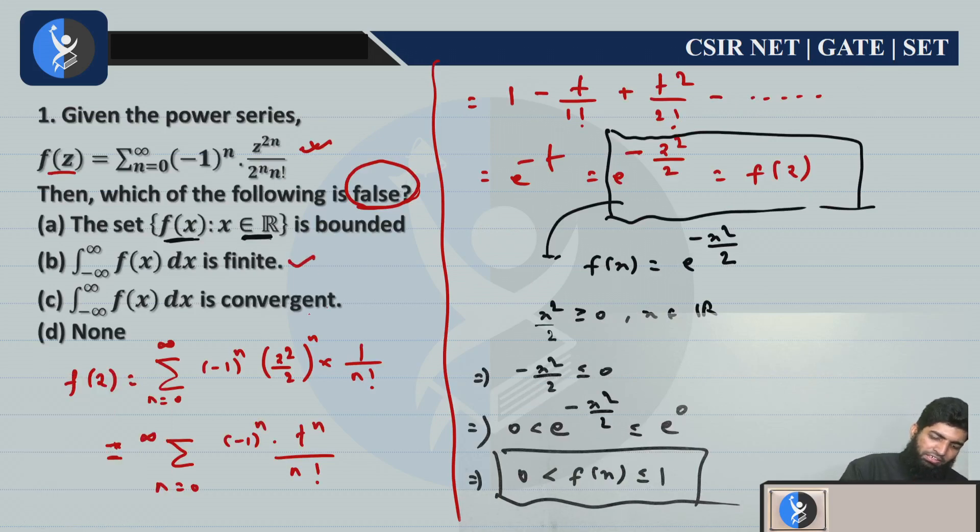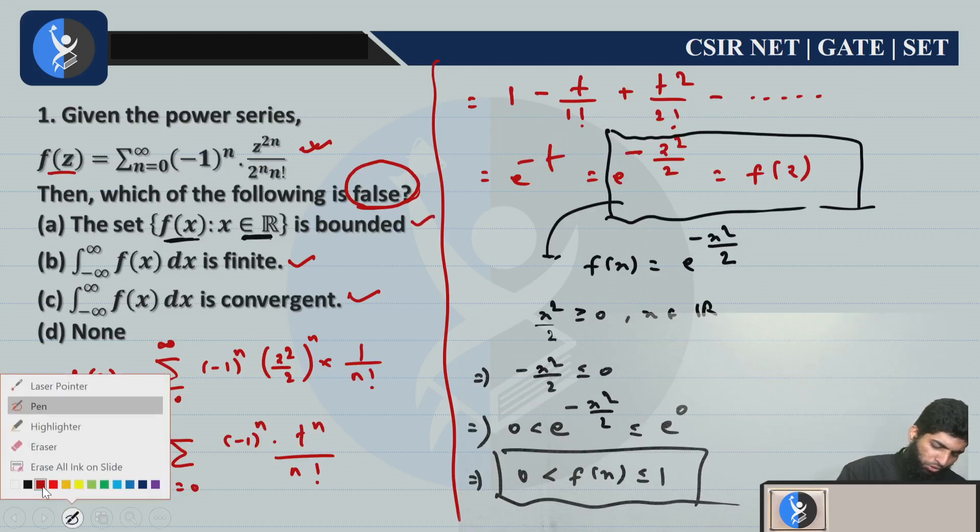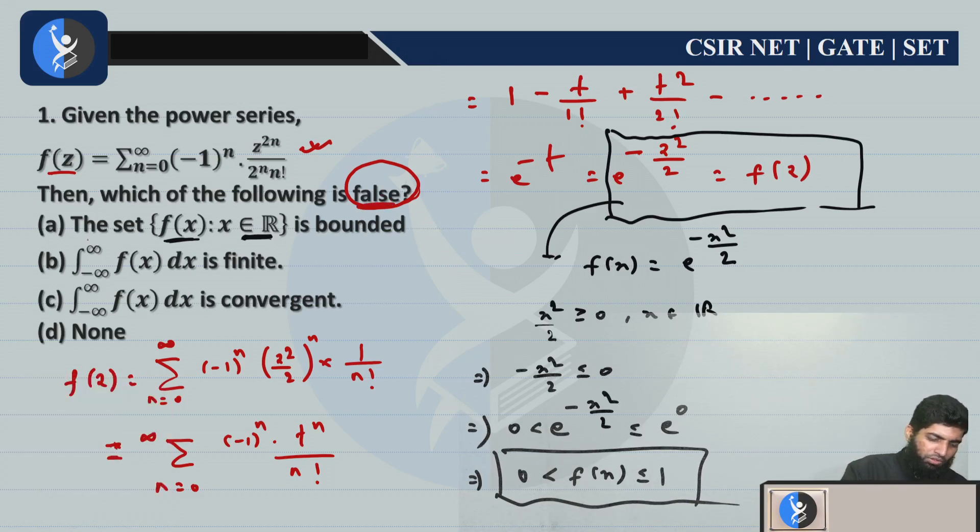This is finite, this is convergent, this is bounded also. But all three options are correct and we have to choose the false option. So option (d) 'none' is false, right? So I think you got the concept of this question. If you have any question, please let me know in the comment box. This is all about today's lecture. Thank you so much and happy learning.